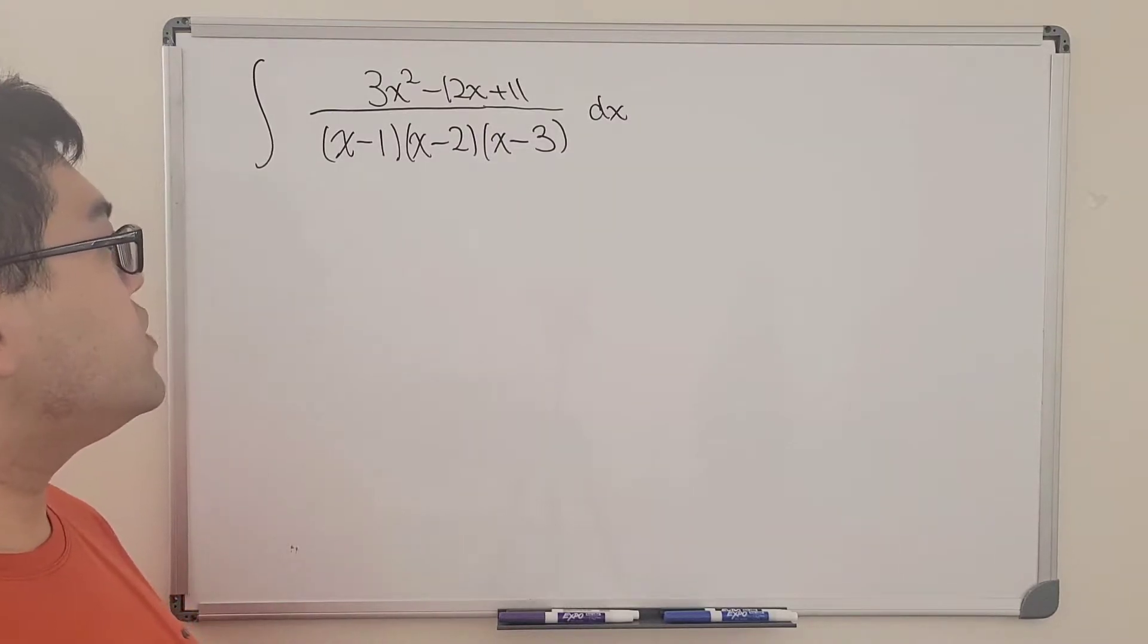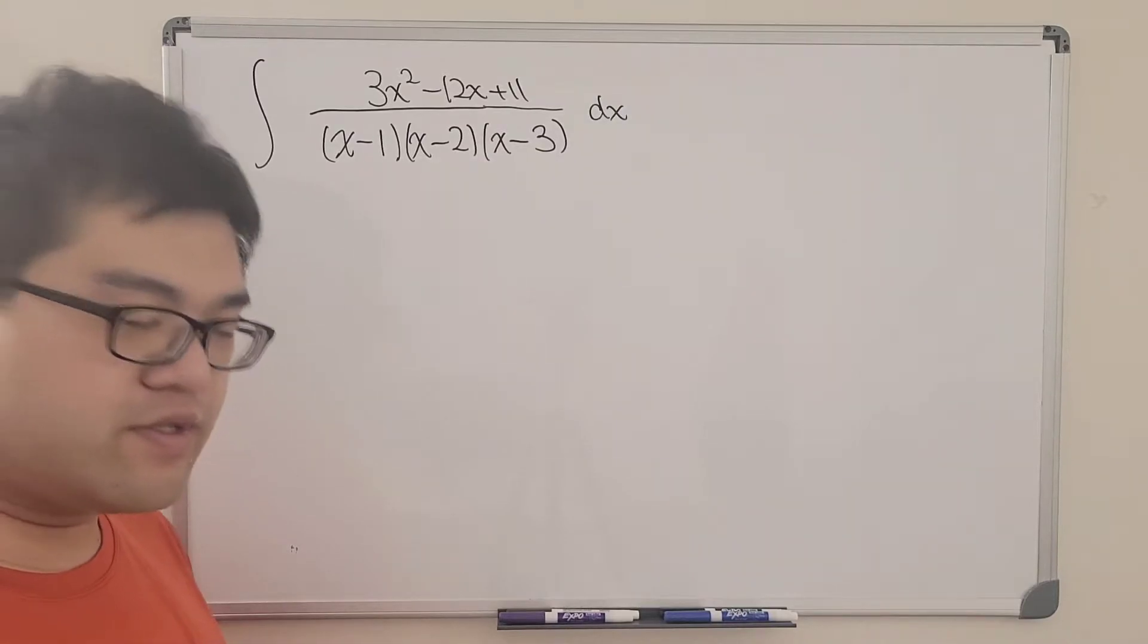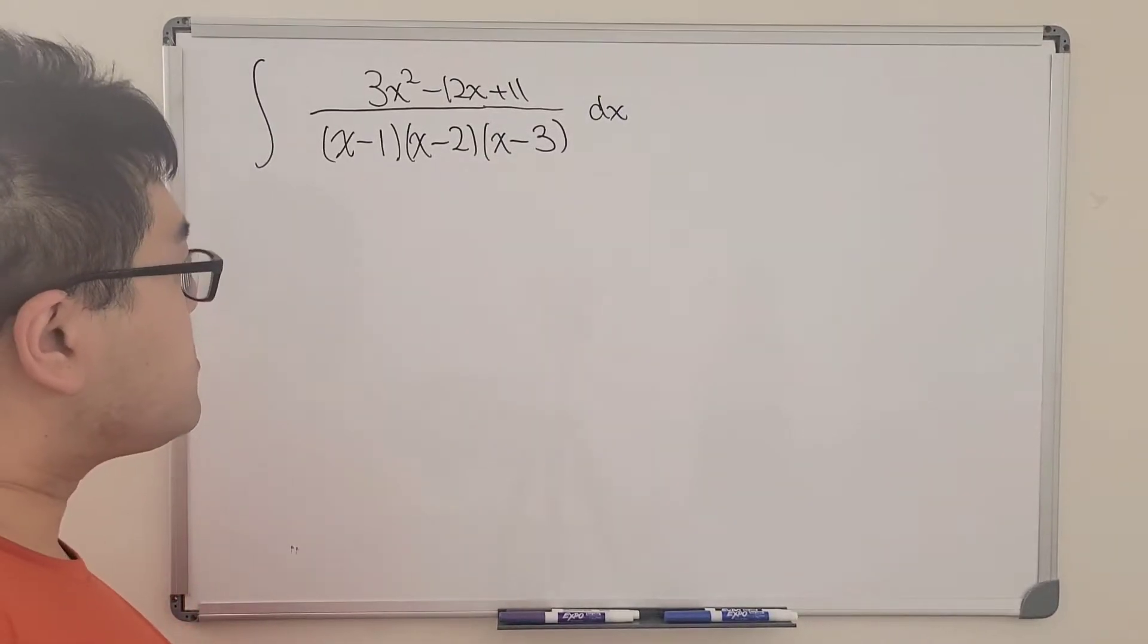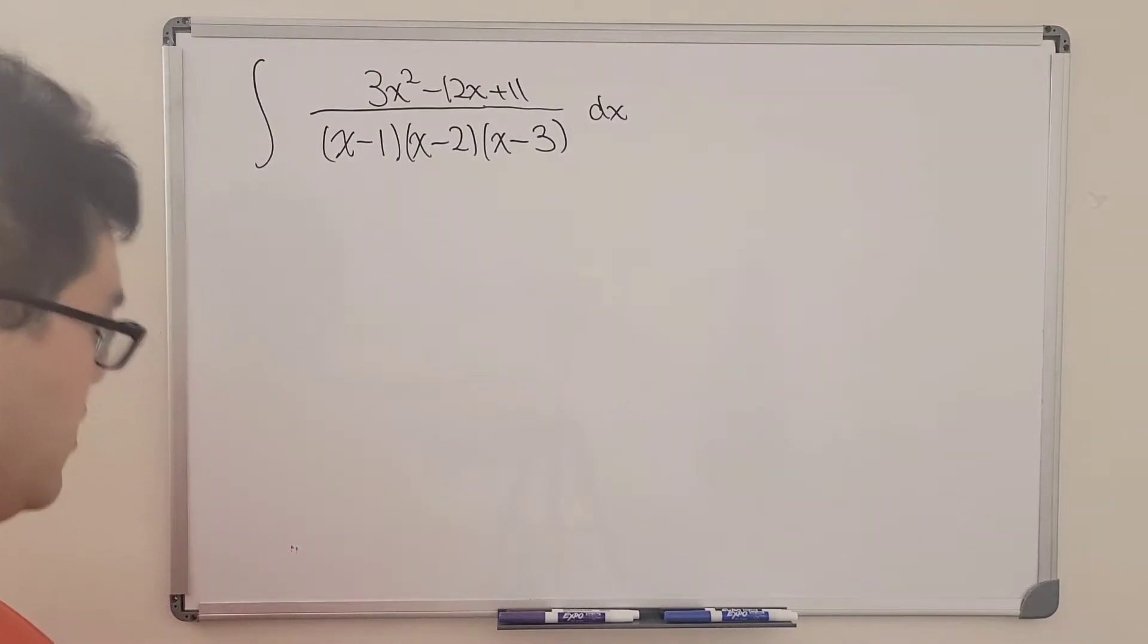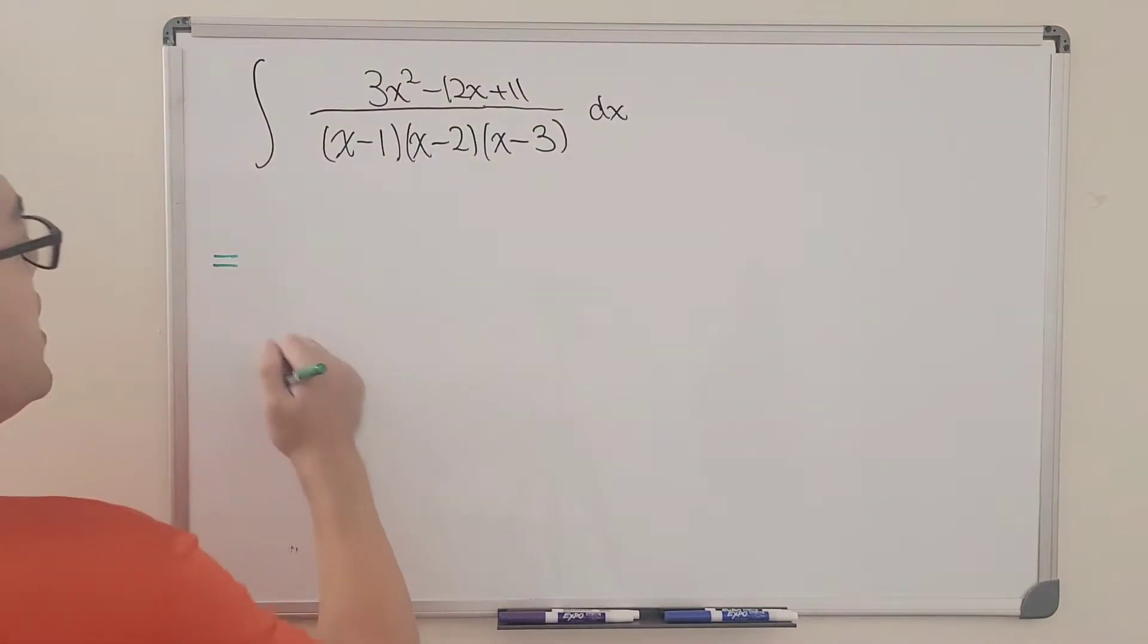What's up everyone? In this video we're going to do the following integral in two different methods, namely the integral of 3x squared minus 12x plus 11 all over the product of x minus 1 times x minus 2 times x minus 3 dx.